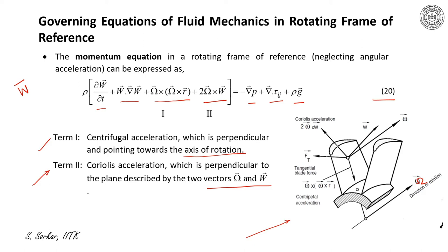W is the direction of relative velocity within the blade passage at a point P. Omega × W, which is the Coriolis force, is perpendicular to both omega and W, as indicated. Omega × (omega × rho) represents the centrifugal force; the centripetal force is directed toward the center along the radial direction, so the centrifugal force acts outward in the radial plane. Thus, the Coriolis forces act along the radial plane and the circumferential plane, while the centrifugal force acts in the radial direction.